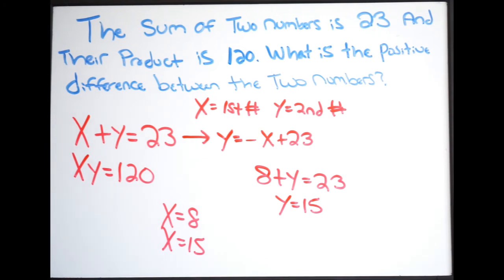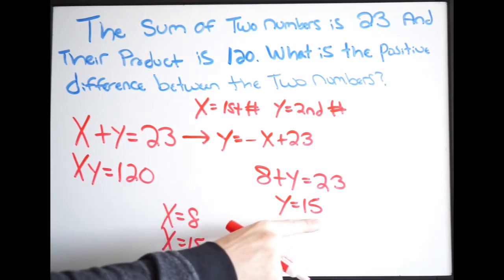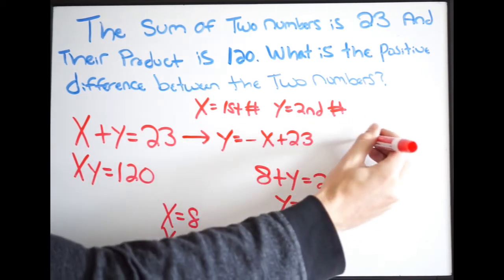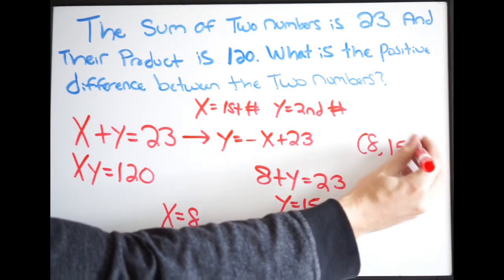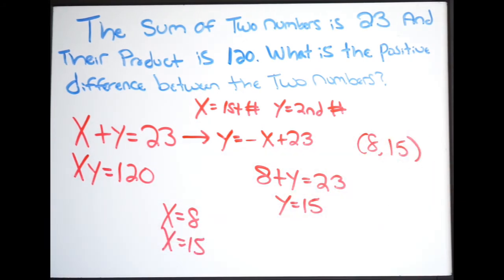And we can write this as a point. I plugged in an 8 for x and I returned a 15 for my y. So as a point, it's going to be 8 comma 15. There's one solution. Let's get our next one.